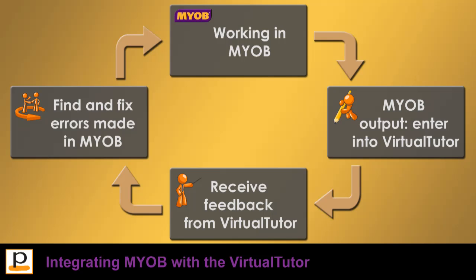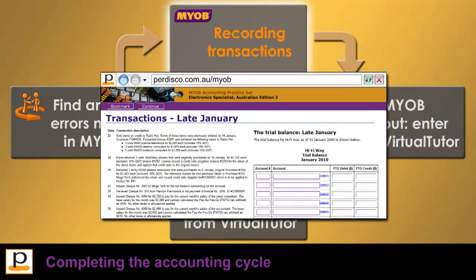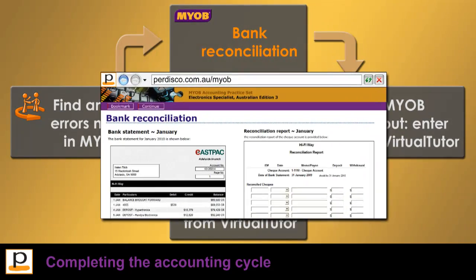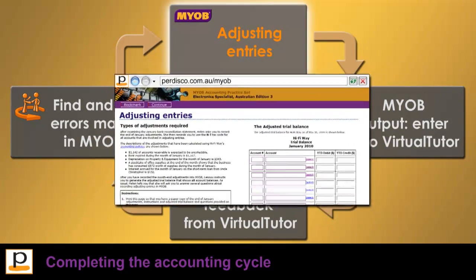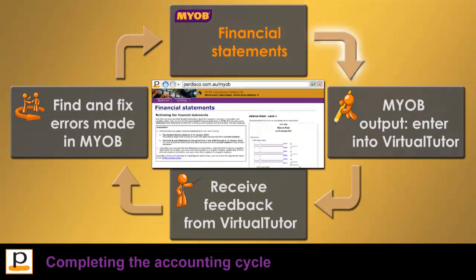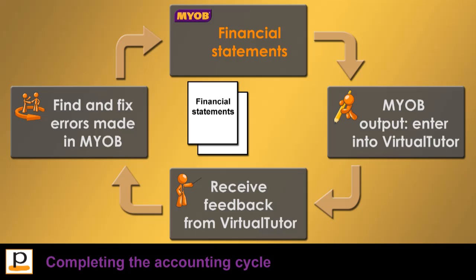Students then apply this process to each of the remaining parts of the practice set to complete the accounting cycle — by recording further transactions for January and generating different trial balance reports, performing a bank reconciliation, recording adjusting entries and generating an adjusted trial balance, and generating financial statements. As a further step, you can ask your students to print their financial statements and submit them along with their MYOB data file for verification or optional manual grading.